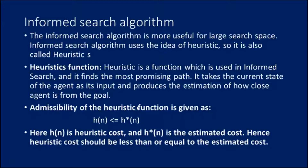Next, what we are going to see is informed search algorithm. In uninformed search, the name itself indicates there is no clear information available for solving a particular problem. Here in the case of informed search algorithm, there is some information about it, so it feels a bit easier to solve the particular problem. Uninformed search looked through the search space for all possible solutions without having any additional knowledge about the search space.